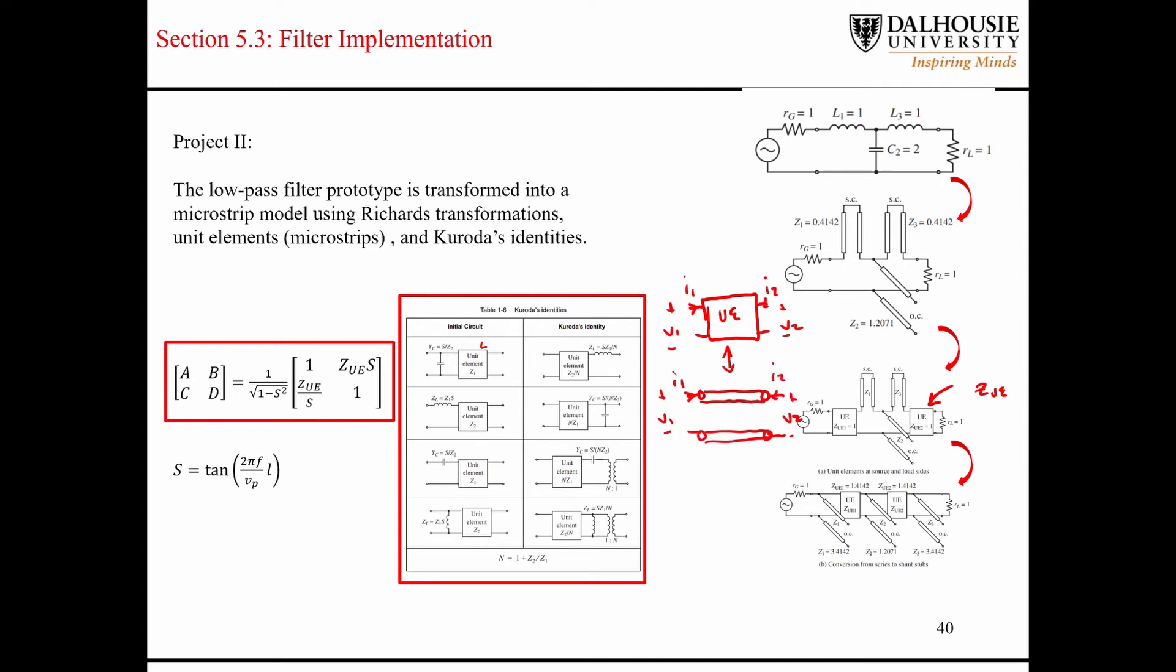This is a two-port network that is defined by a matrix that relates the input voltages, the input voltage and current to the output voltage and current. And the output current has a negative sign here because we could see for a transmission line that by convention, we draw the arrow for the output current towards port 2 of our two-port network here.